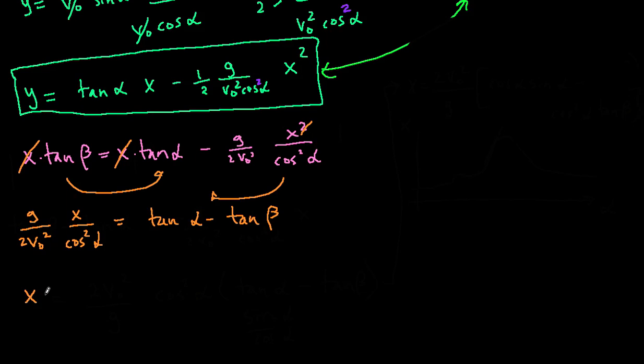Then, solving for x further, we're going to get 2v0 squared over g. Now I have to multiply everything by cosine squared. So remember that tangent is sine over cosine. So cosine squared times sine over cosine gets rid of one of the factors of cosine.